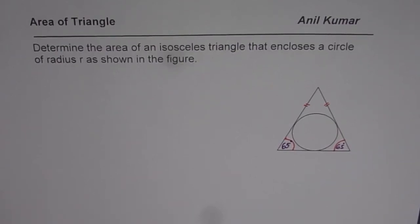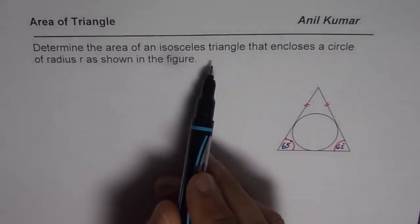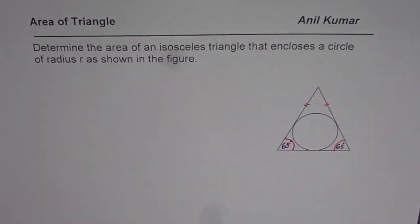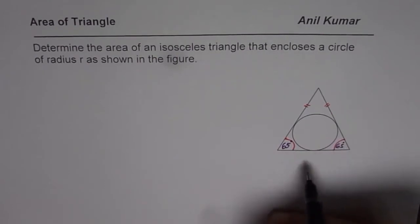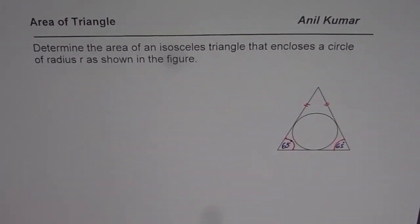I'm Anil Kumar and here is a very interesting question which involves the area of an isosceles triangle with an inscribed circle. The question is: determine the area of an isosceles triangle that encloses a circle of radius R as shown in the figure. What is important to understand is that there is a circle inscribed in a triangle, and we are assuming that the circle just fits in.